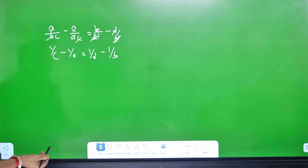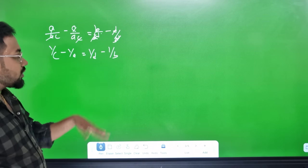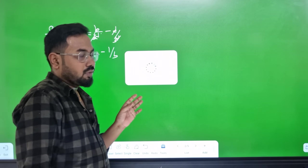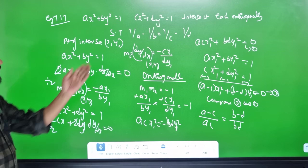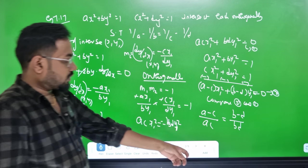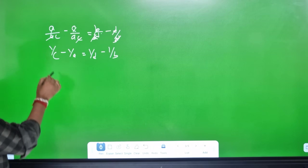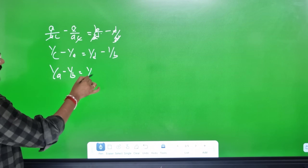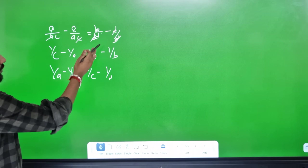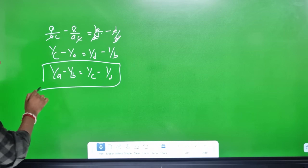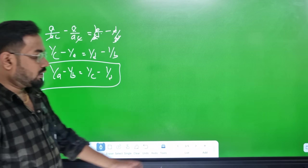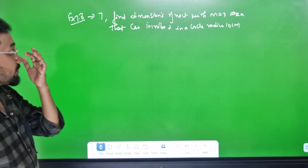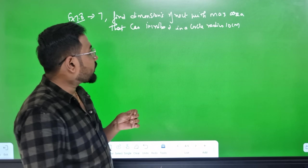Rearranging the answer: 1/a − 1/b = 1/c − 1/d. Hence proved. The sum is very simple. Now moving to example 7.8: 1/a − 1/b equals 1/c − 1/d.